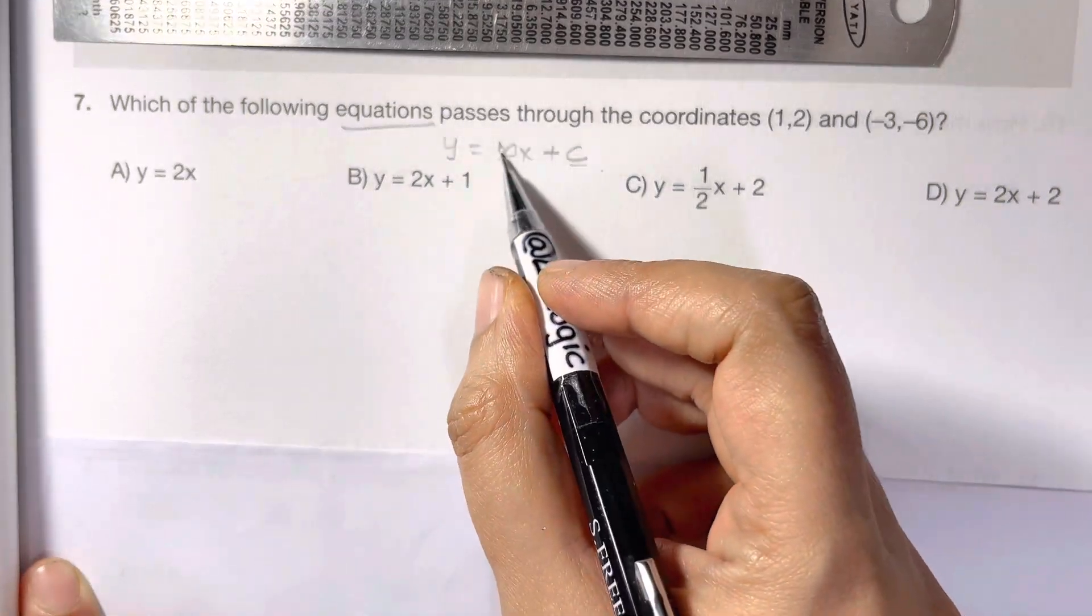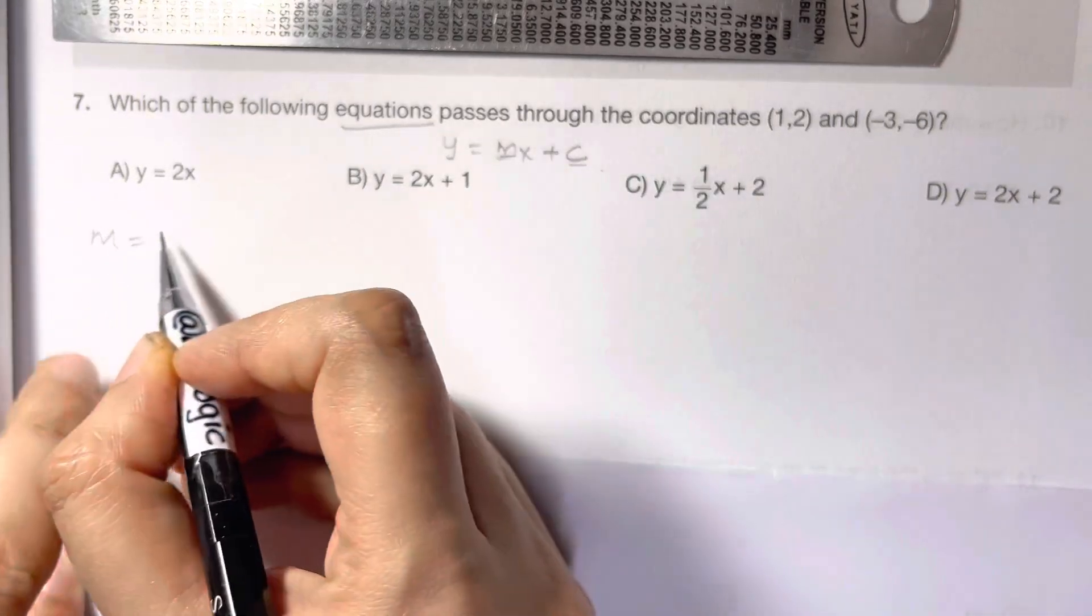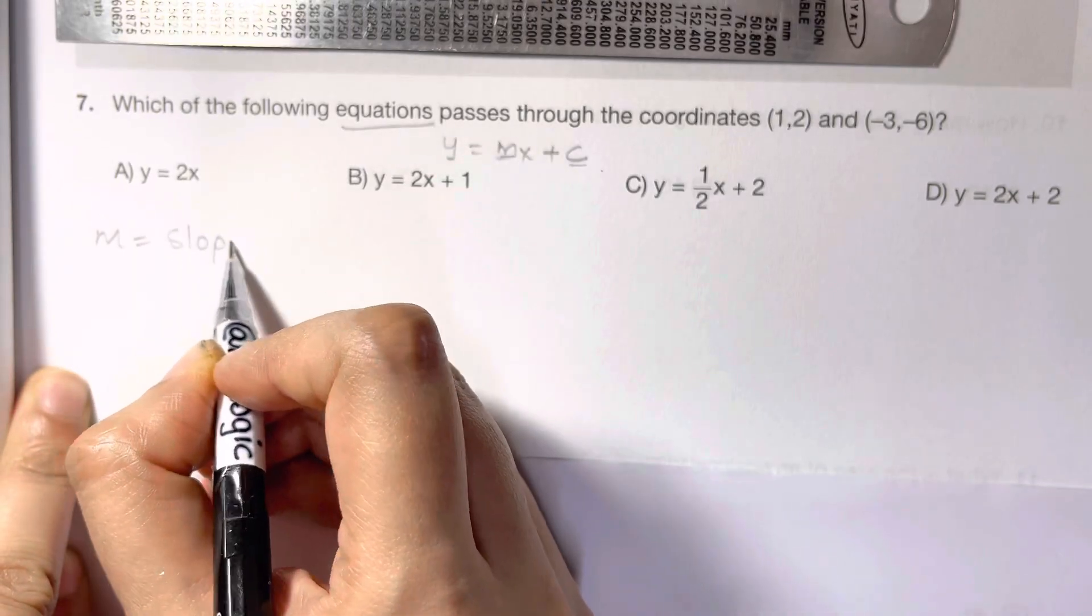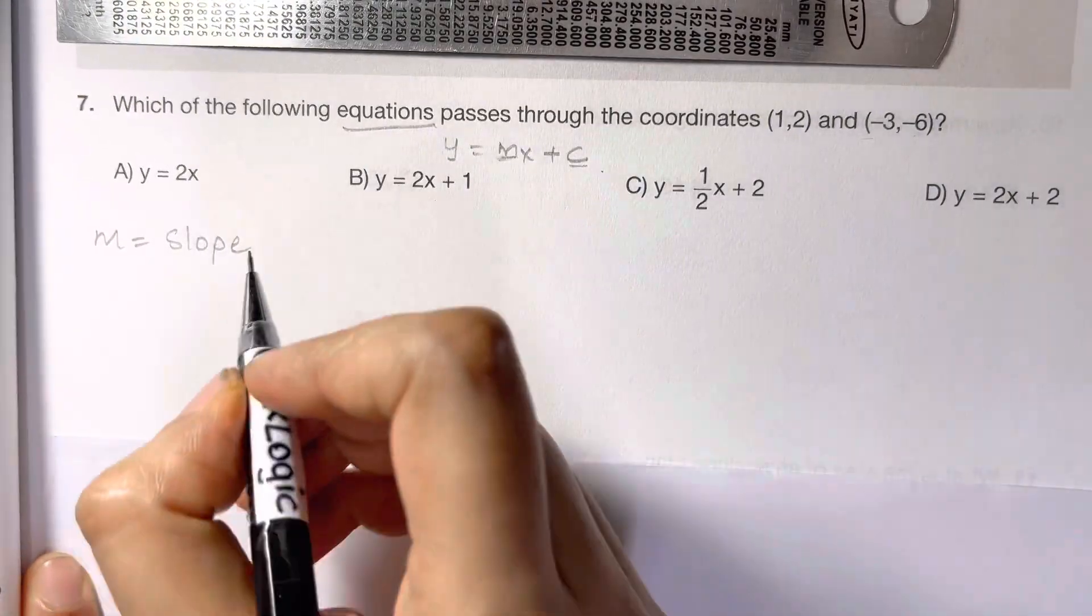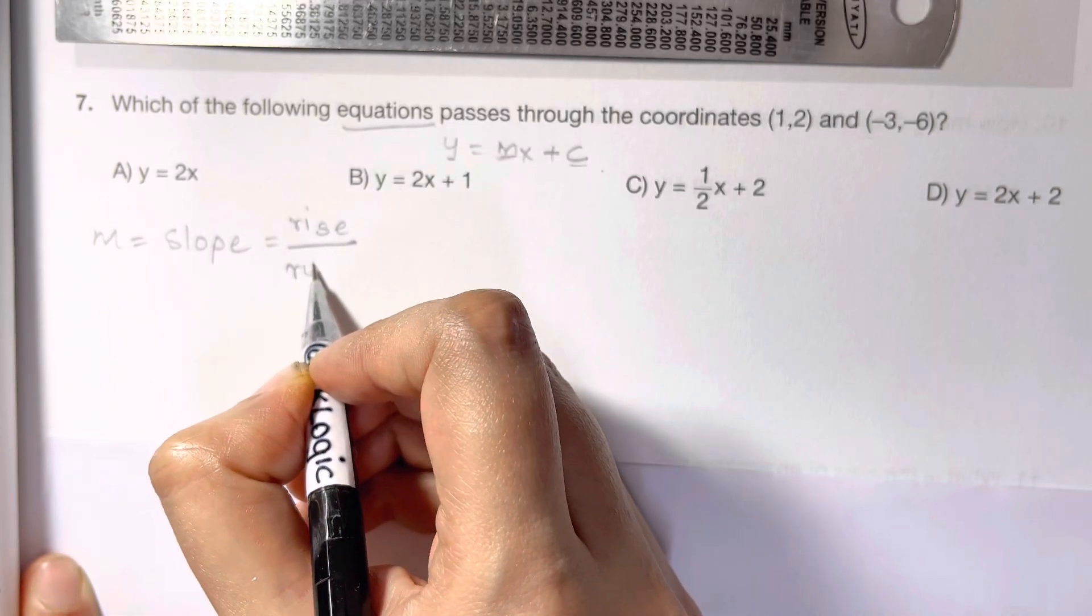So how should we solve for the slope? Slope is always given by rise over run.